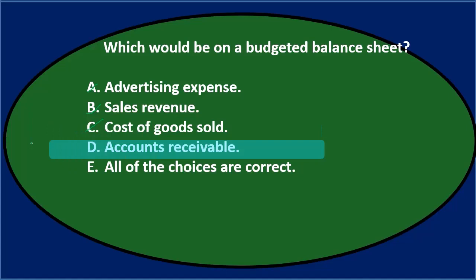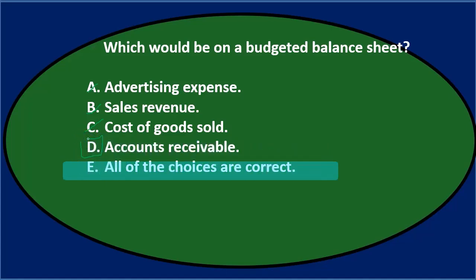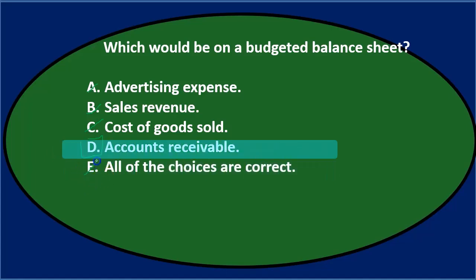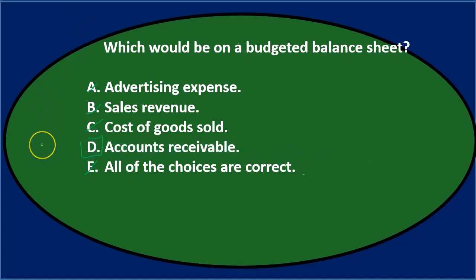D. Accounts receivable — that's a balance sheet item typically. So I would think it would be on the budgeted balance sheet if we're talking about budgeted accounts receivable. And then the last option says all the choices are correct, and we've eliminated three of them, so that is not the case. Final answer: which would be on a budgeted balance sheet? D. Accounts receivable.